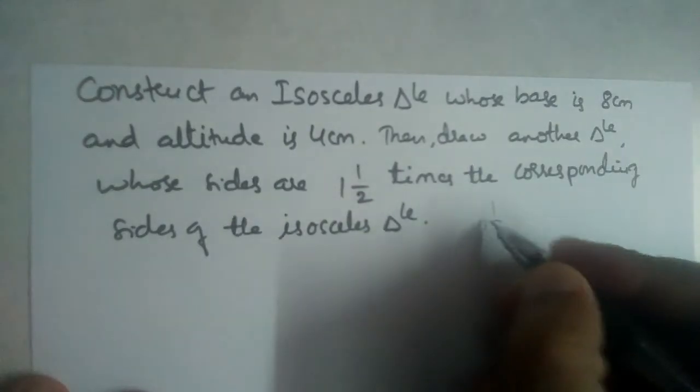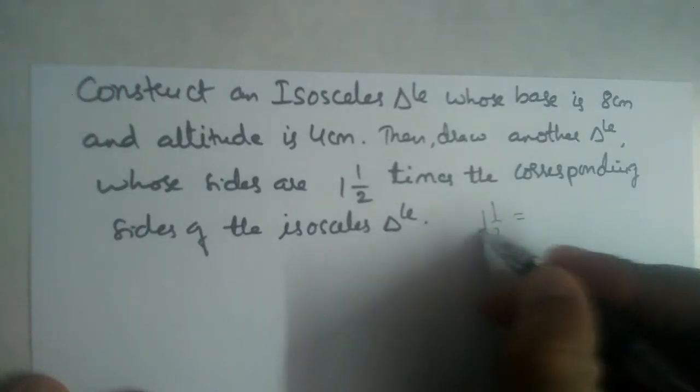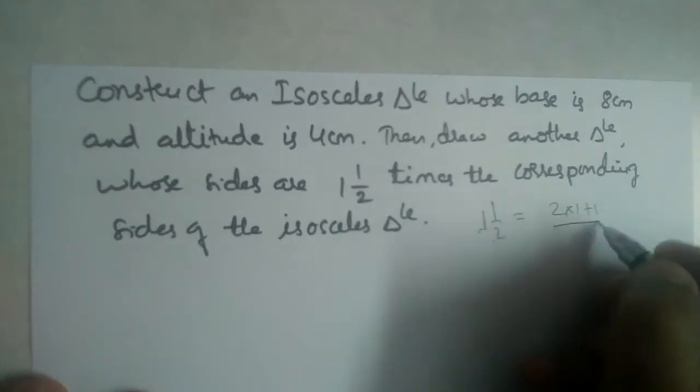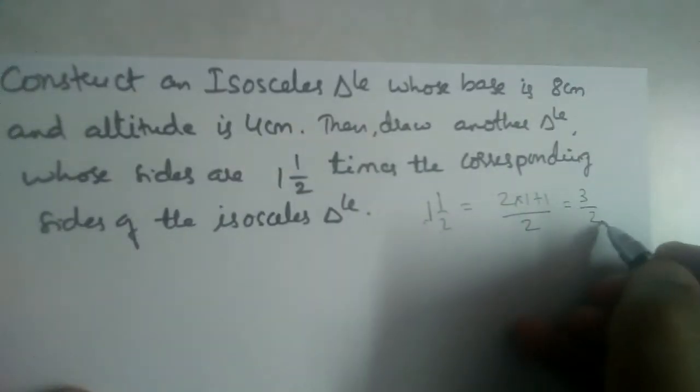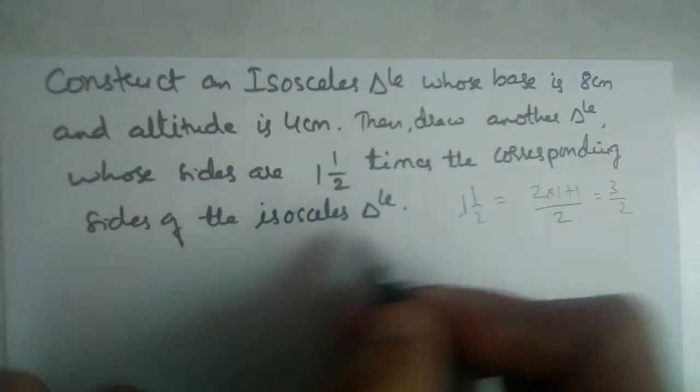So 1 and 1/2 is equal to... we should multiply this 2 into 1 plus 1 divided by 2. So this will give us 3/2. So corresponding sides should be 3/2 of an isosceles triangle.